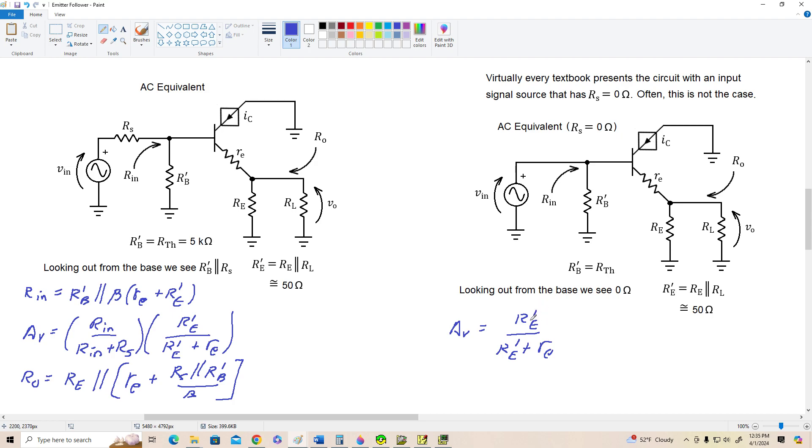It's going to be R'E divided by R'E plus little RE. Now typically R'E is much larger than little RE, so this is going to have very little effect, and we can approximate the voltage gain as being one. That's what's usually done in all the textbooks.